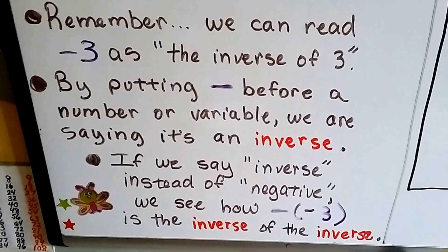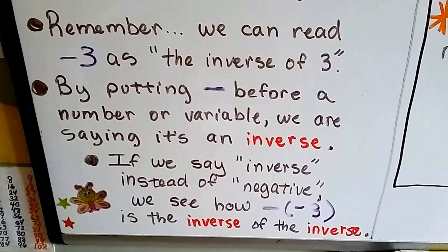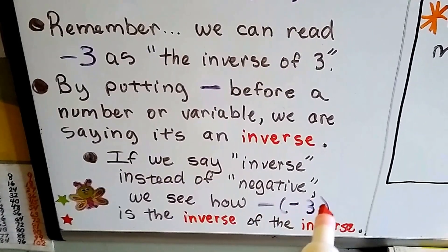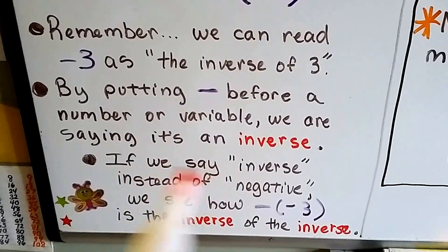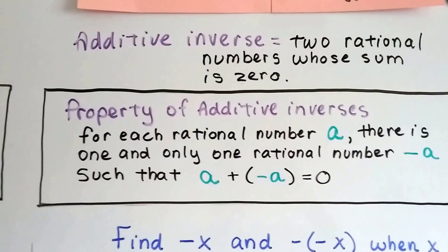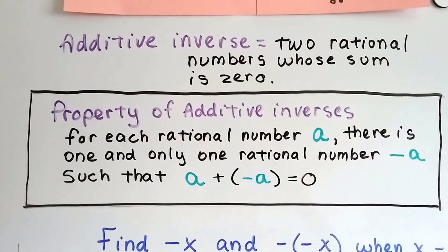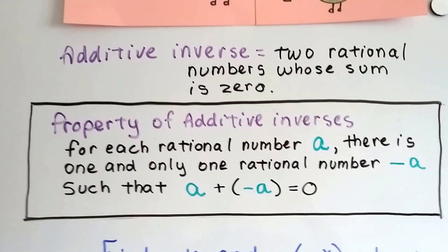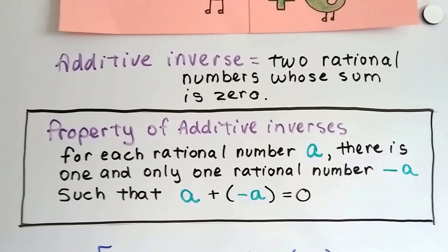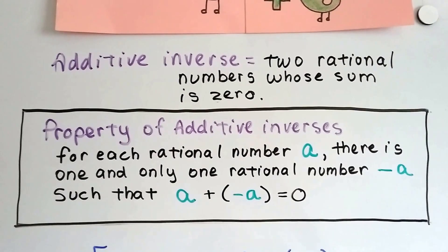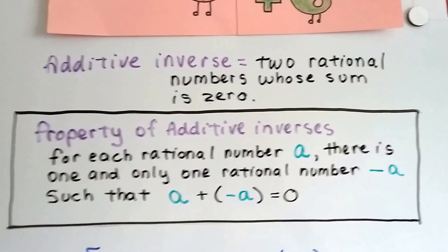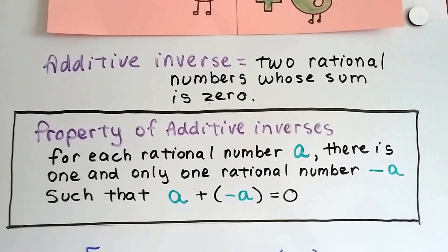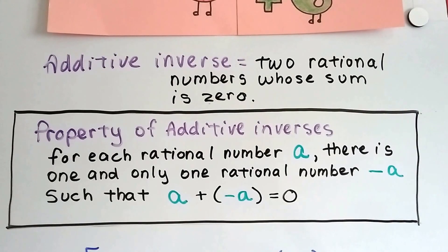If we say 'inverse' instead of 'negative' or 'minus,' we see how the inverse of the inverse of 3 is the inverse of the inverse of 3. Just don't say negative or minus. The additive inverse of two rational numbers whose sum is 0 — just two numbers that when added together equal 0. The property for additive inverses is: for each rational number a, there is one and only one rational number negative a, the inverse of a, so that a plus the inverse of a equals 0.